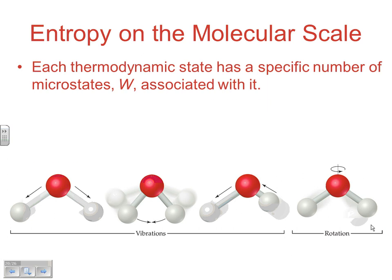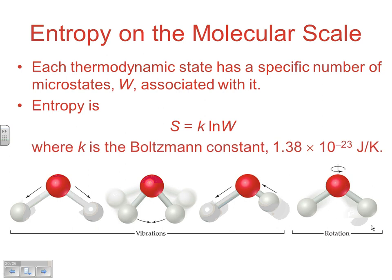Each thermodynamic state has a specific number of microstates, W, associated with it. So entropy would be entropy equals K times the natural log of W, which is related to the number of microstates. And K is the Boltzmann constant, which is 1.38 times 10 to the negative 23rd joule kelvins. So this would be a way to calculate, if you could estimate the number of microstates, what is the absolute entropy of a particle through experimentation.